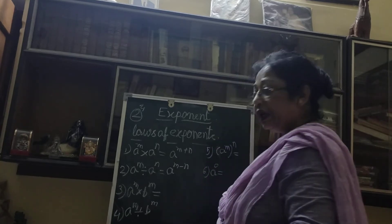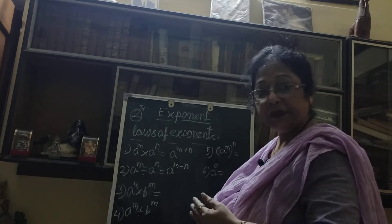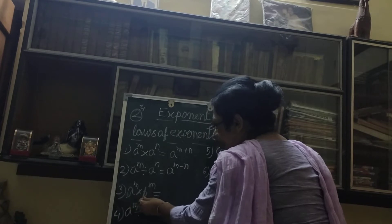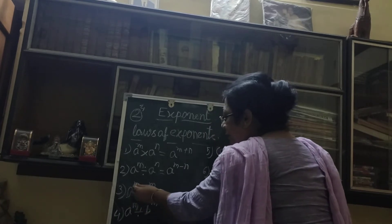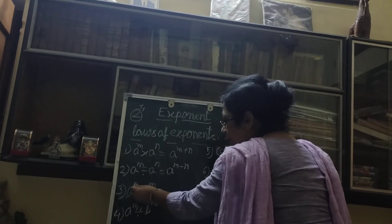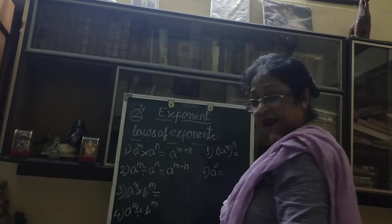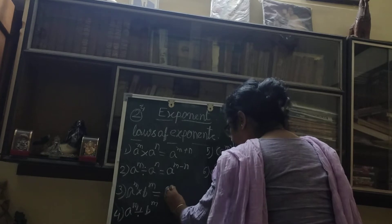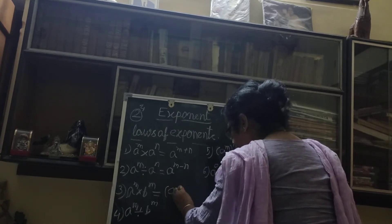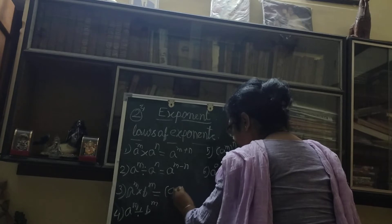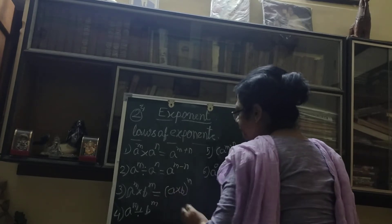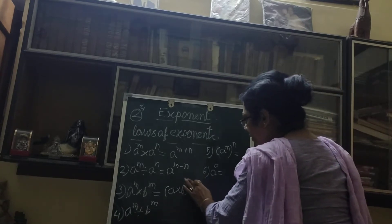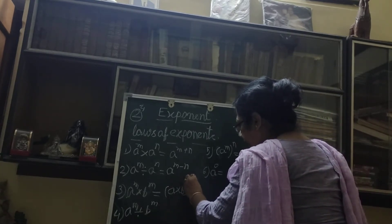Now here it is a to the power n into b to the power n. Here you see the bases are different — one is a, another one is b — but the power, both are n; the powers are the same. That time what we will do: we write it as (a into b) to the power n.